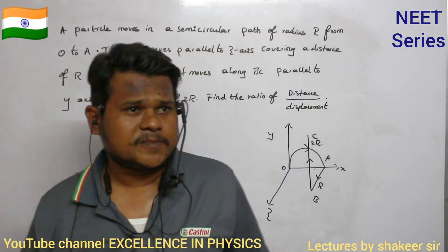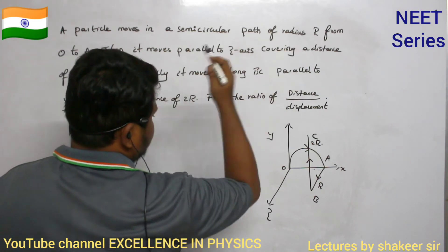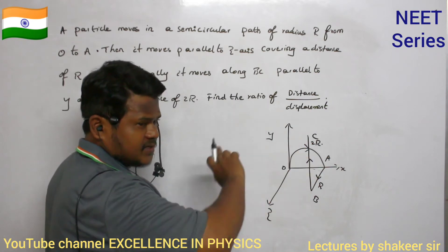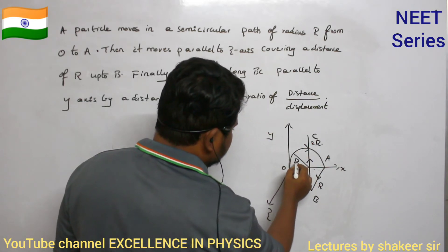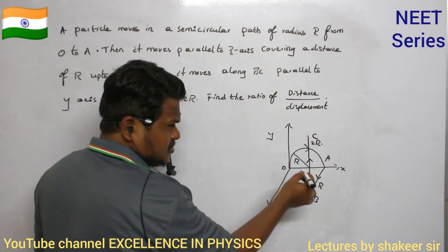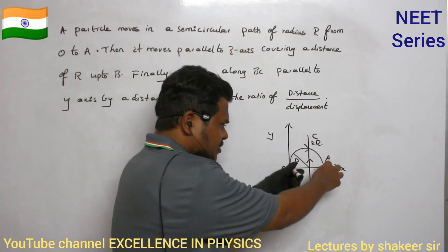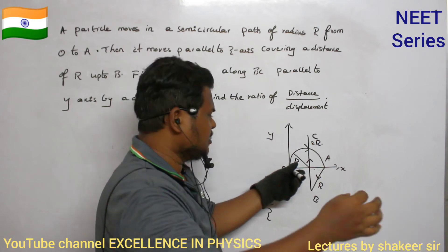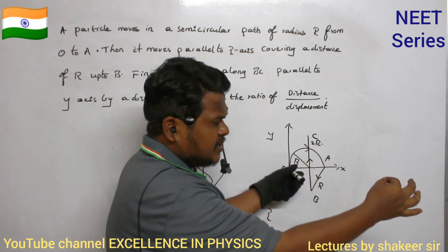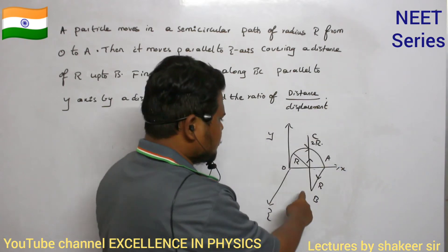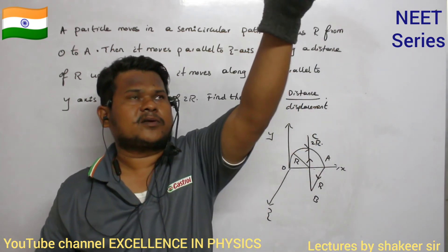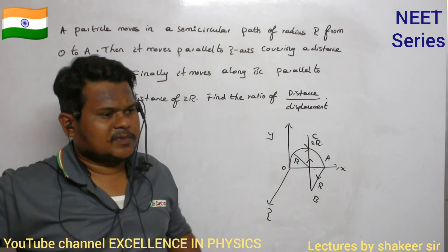Next question: A particle moves in a semicircular path of radius r from O to A, then moves parallel to the z-axis (out of the board) by a distance r, and then moves along the y-axis for a distance of 2r. Find the ratio of distance to displacement.